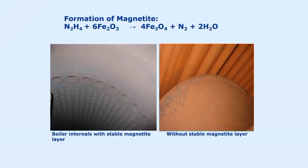Magnetite, which is greyish in colour — a little pinkish grey in colour — which you can see on the left hand side of your screen, is a necessary protective oxide that should be available on all surfaces interacting with water.